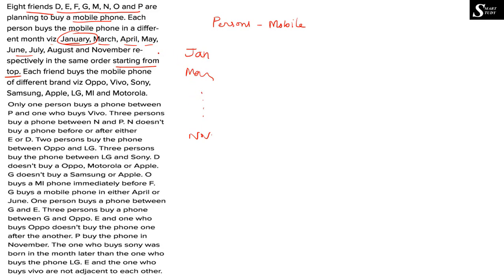The 8 persons are going to buy a mobile phone in 8 different months: January, March, April, May, June, July, August and November. Each friend buys the mobile phone of a different brand — Oppo, Vivo, Sony, Samsung, Apple, LG, MI and Motorola. We need to find out which person buys in which month and which brand.